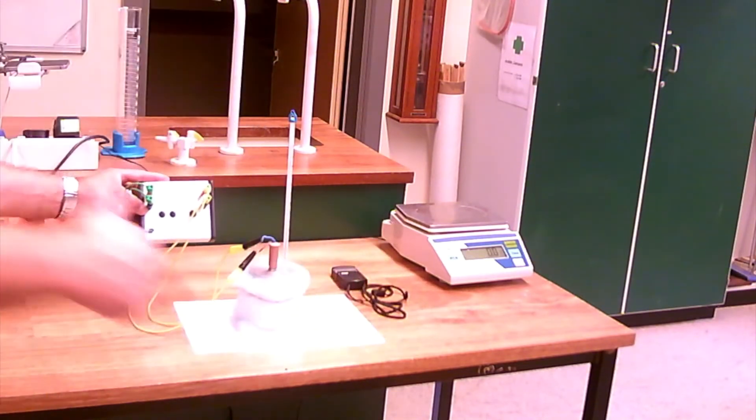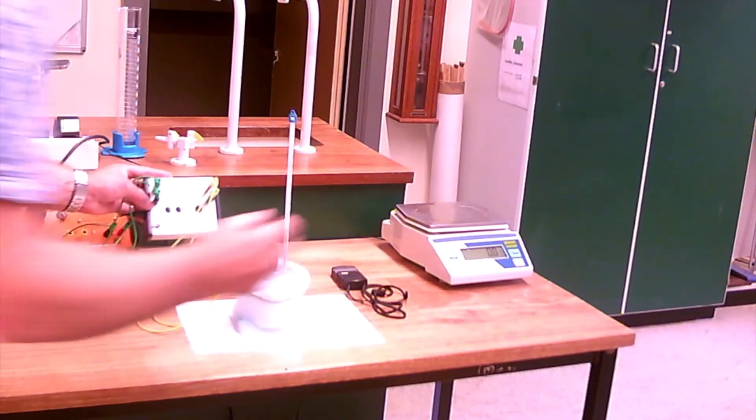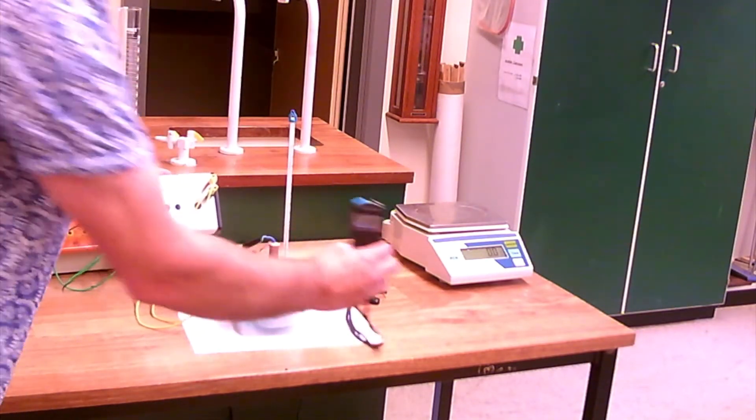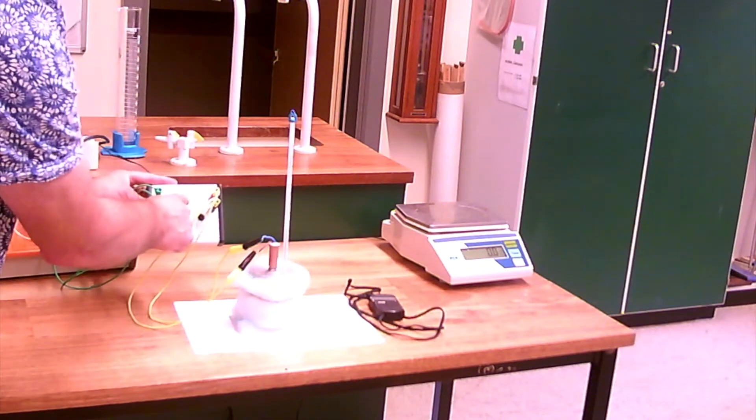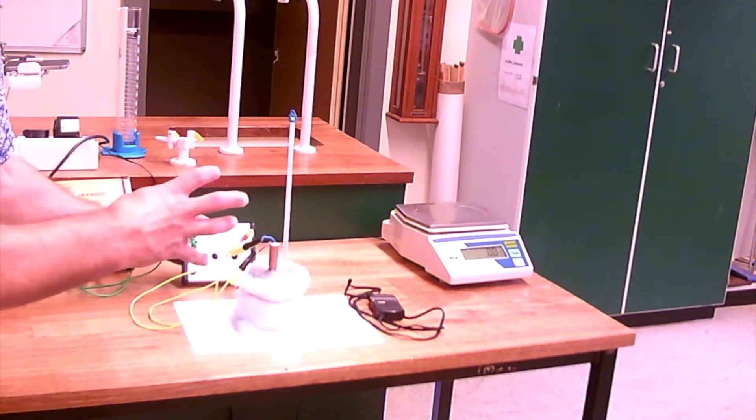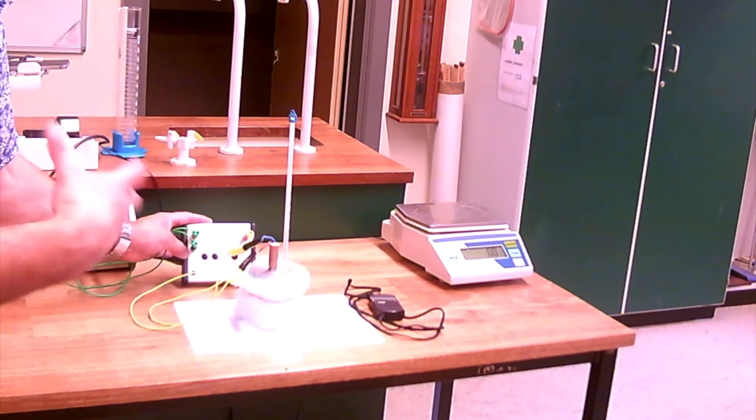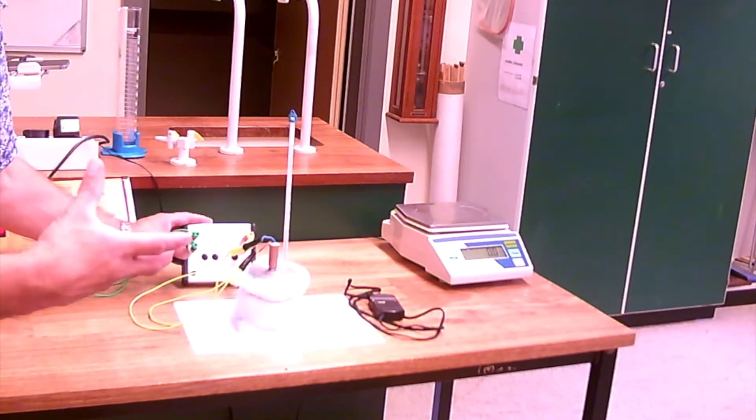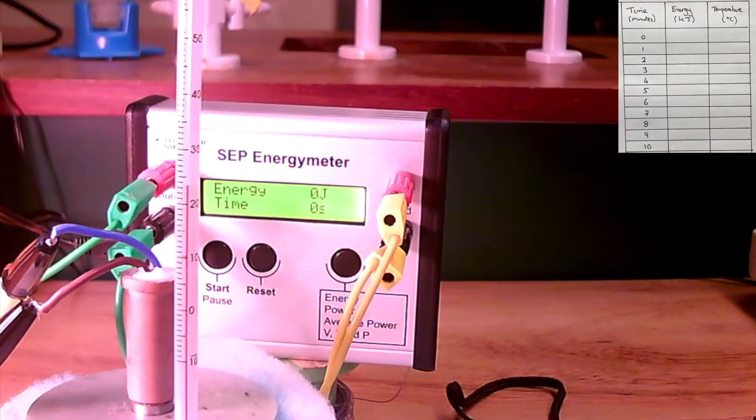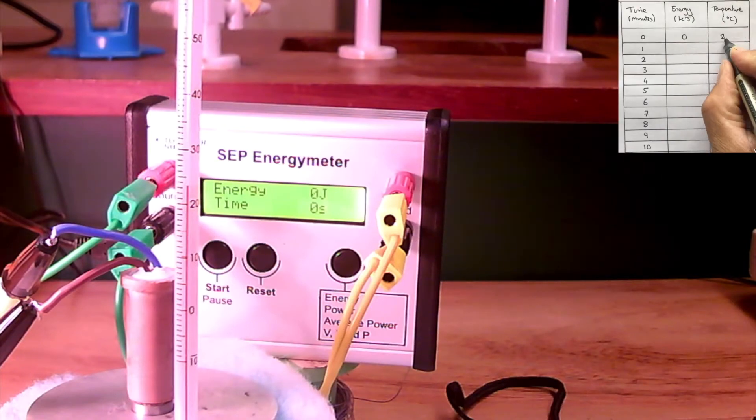And we need to measure the temperature every minute and the energy every minute for 10 minutes. But the beauty is we should be using a stopwatch, but this meter not only has the energy, it has the seconds as well. So I'm going to set this up with a camera so you can see and we'll increase the video speed so you can then take measurements every minute and then plot the graph. Before we turn the power supply on we need to measure the initial temperature which is 23.5 degrees.